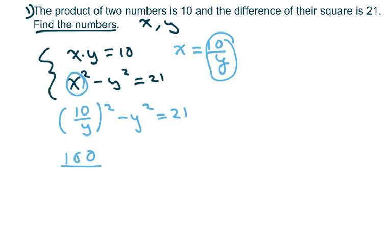That's going to be 100 over y squared minus y squared equals 21. Now, to clear this out here, I'm going to multiply everything through by y squared.